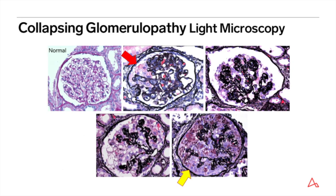The diagnosis of CG hinges on two key elements as seen by light microscopy. First, glomeruli exhibit segmental to global retraction of the tuft with collapse and corrugation of the capillary loops. Tuft collapse may be subtle or severe as shown in the panels. Secondly, glomerular epithelial cells overlying areas of tuft collapse display hypertrophy with reactive nuclear atypia, prominent protein resorption droplets, and cytoplasmic vacuolization as shown by the red arrow. Hypertrophy is often accompanied by hyperplastic changes as well. Epithelial cell hypertrophy can be exuberant and fill Bowman's space, resulting in the formation of pseudocrescents shown by the yellow arrow.